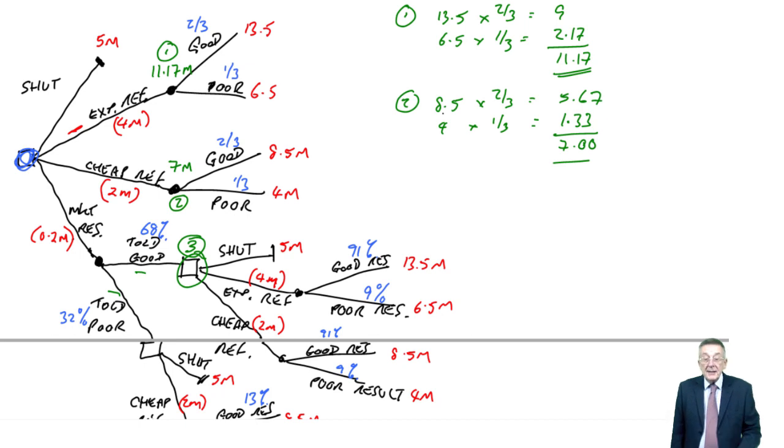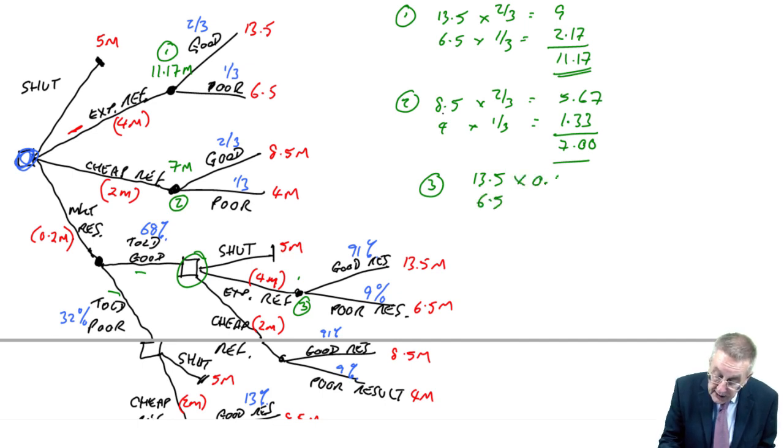If we did research and if we were told it was good, what would I decide to do? And so, let's look at that a little bit on its own. We'll either decide to shut and we get five million. Or, let me change the number, if it's expensive, we'll pay out four million. And how much do we get? Well, we either get 13 and a half or we get six and a half. The probabilities are 0.91, 0.09.